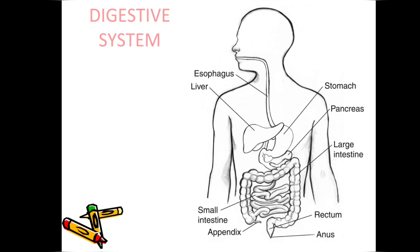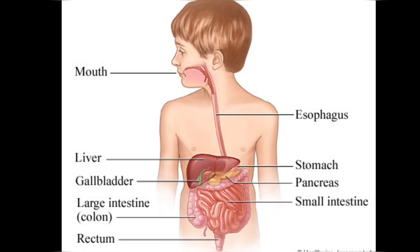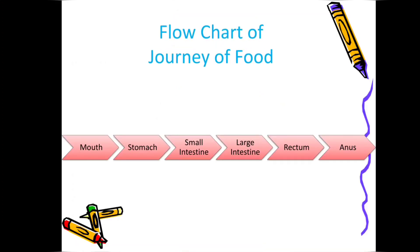The undigested food goes into the large intestine — you can see the outer portion is the large intestine. The water is absorbed there, and the undigested waste material comes out of the body through the rectum and anus. So the flow chart is: mouth → stomach → small intestine → large intestine → rectum and anus.